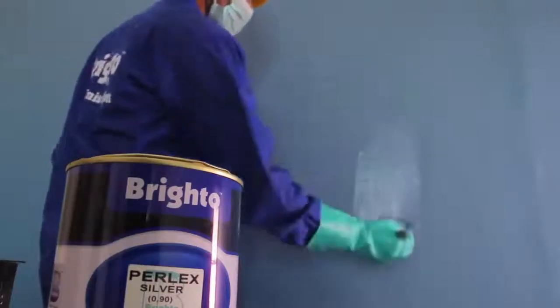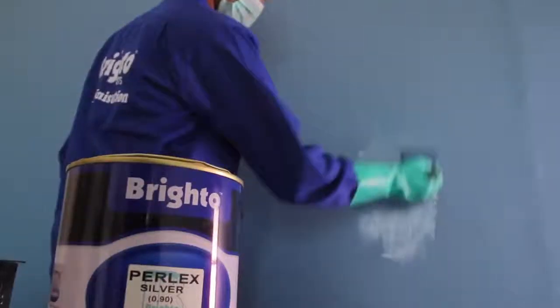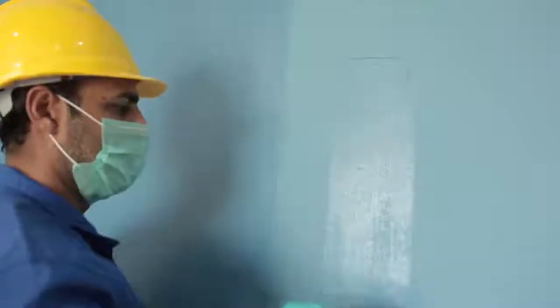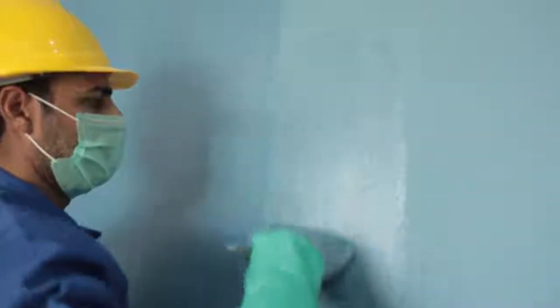Apply two to three coats of Brighto Perlec Silver with any of the following tools: a hard brush, a sponge, or a trowel, according to the desired effect you want to create on your wall. Give each coat a drying time of two to three hours.